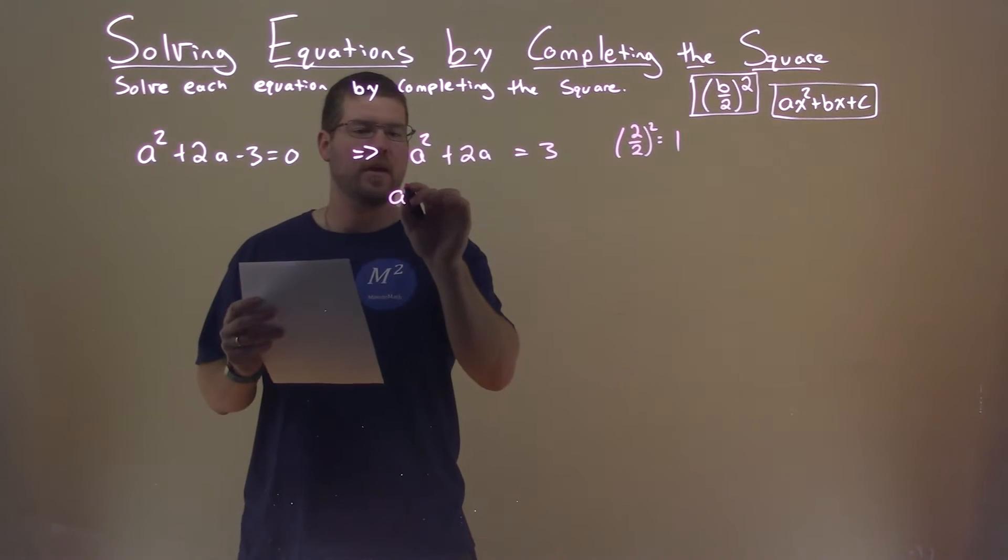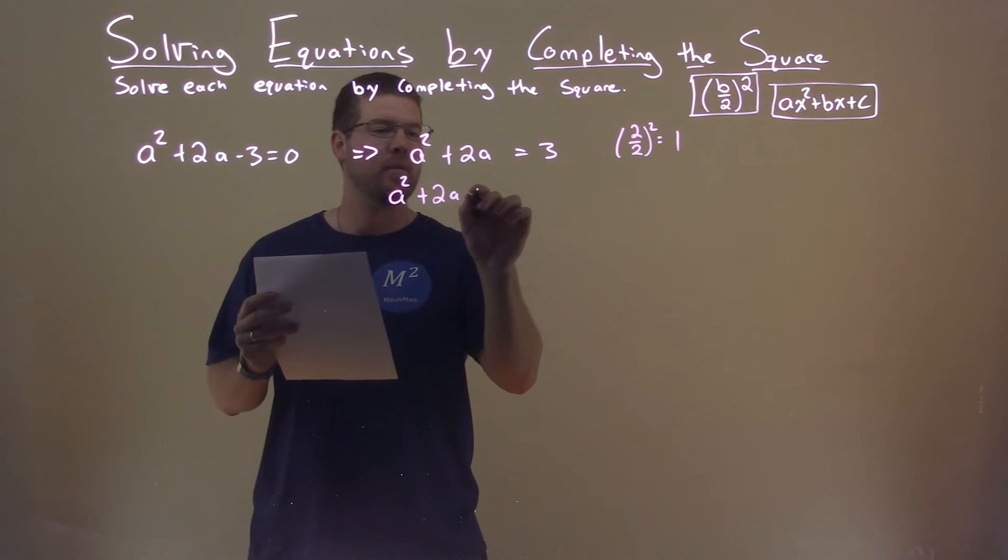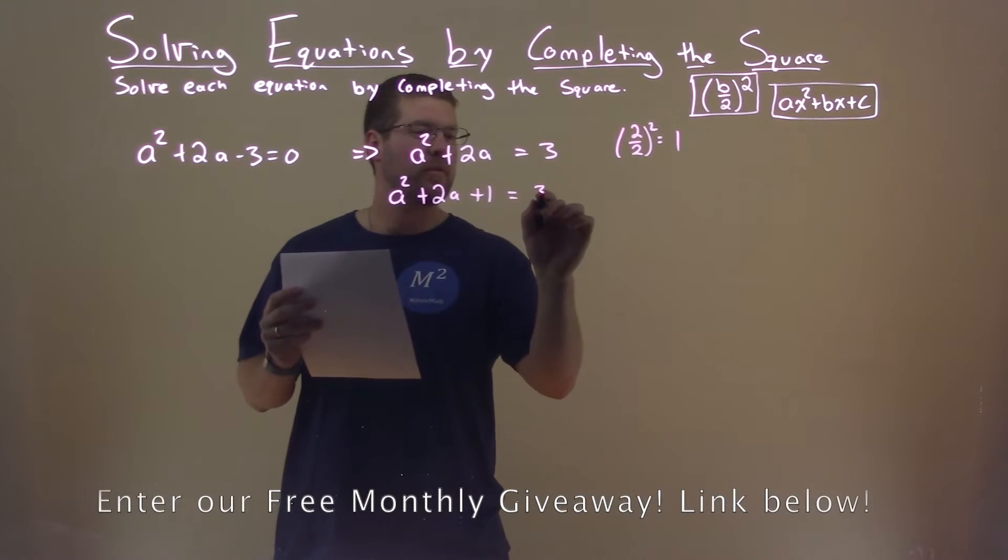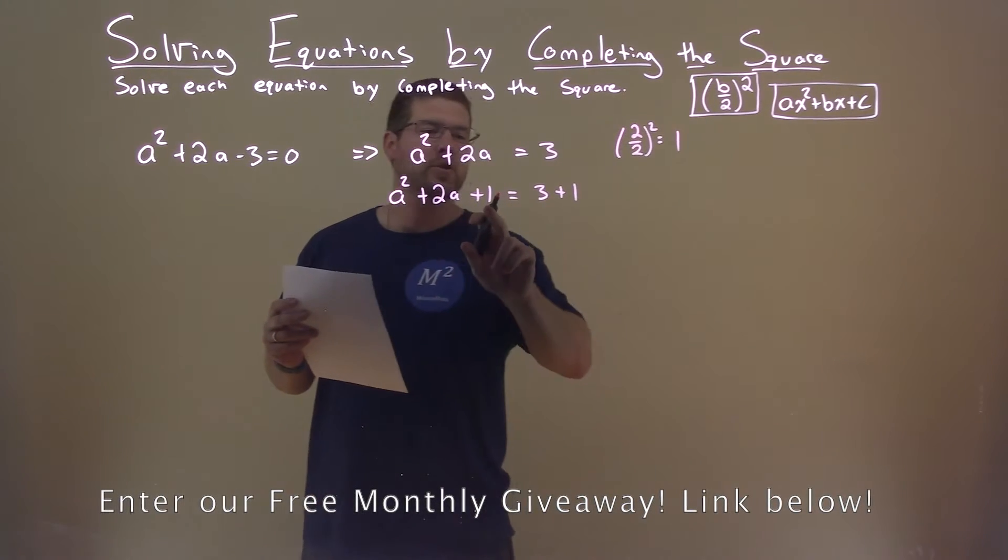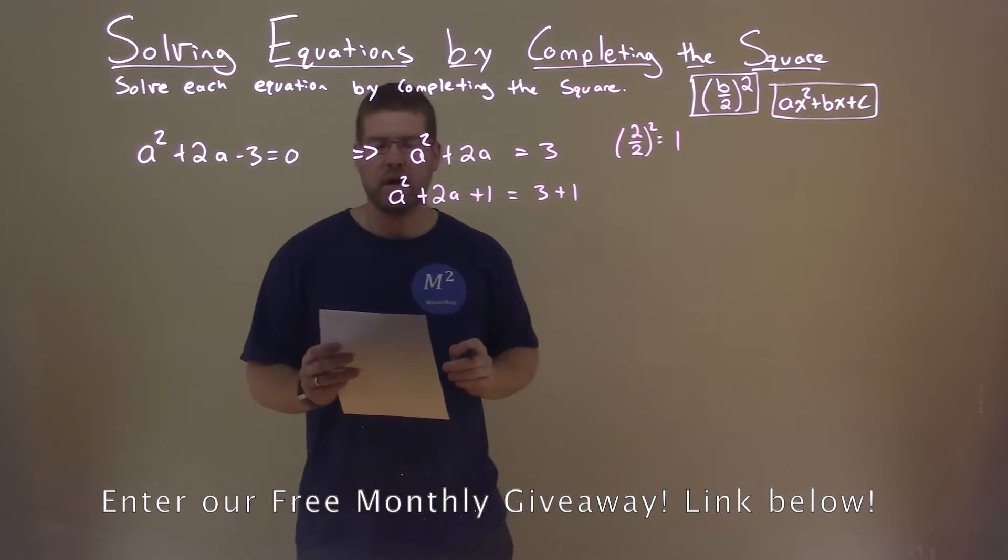So with that information, we say a squared plus 2a plus 1 equals 3 plus 1. We're going to choose to add a 1 to both sides of the equation.